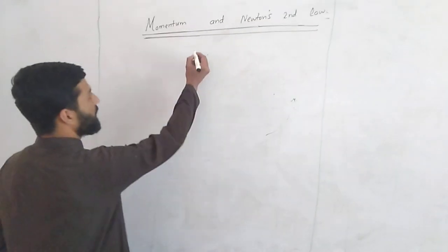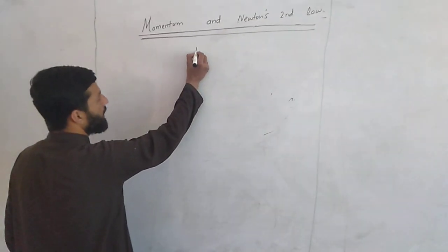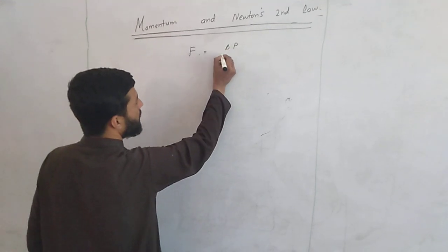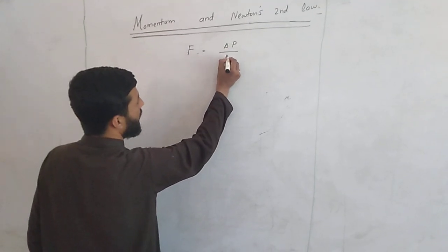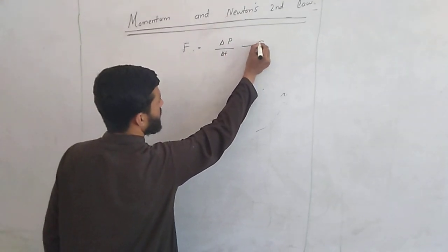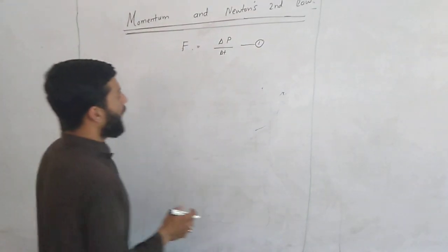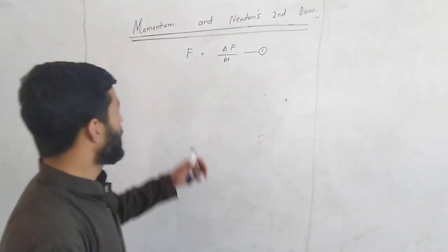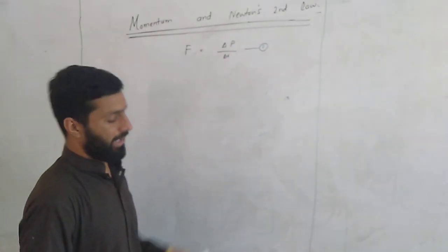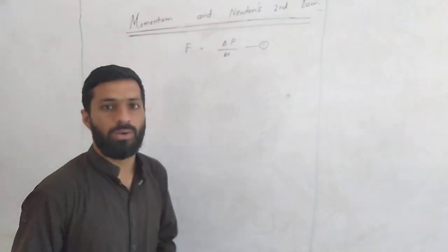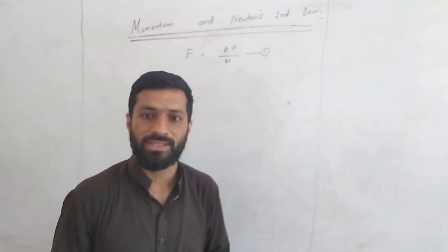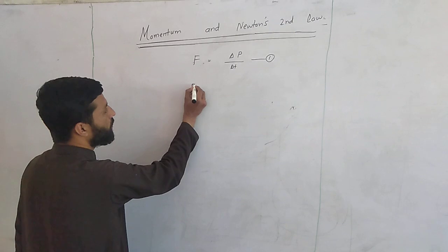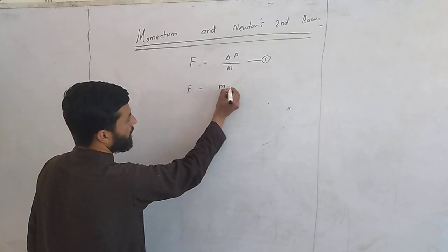This is an equation, and we will try to prove it. F is equal to delta P divided by delta T. Why is this topic given this name? Because Newton's second law is the formulation of force, and Newton's second law tells us that F is equal to M times A.